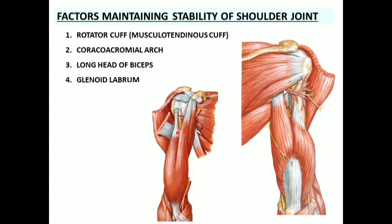Another important stabilizing factor is the long head of the biceps muscle, which passes through the joint cavity and is an important support for the shoulder joint. Additionally, the glenoid labrum — a fibrocartilaginous rim — increases the concavity of the glenoid cavity to accommodate the larger head of the humerus.